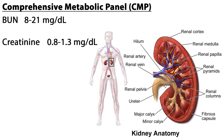Tests specific to the kidneys include BUN and creatinine. The BUN test evaluates kidney function. Urea is a waste product formed in the liver when protein is metabolized. When released into the blood, it is carried to the kidneys, where it is filtered out and released into the urine. If the kidneys are not properly filtering wastes, the level of urea in the blood will rise; normal range of BUN is 8 to 21 mg per deciliter. Creatinine is also an indicator of how well the kidneys are working. It is a waste product produced by muscles breaking down creatine, filtered from the blood by the kidneys; normal creatinine blood level is 0.8 to 1.3 mg per deciliter.